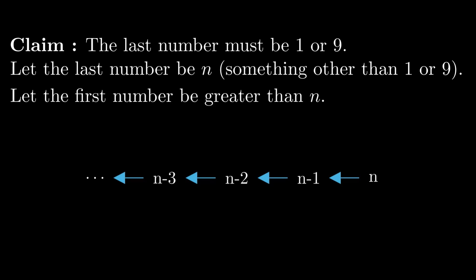Similarly, if we assume that the first number is smaller than n, we can make similar arguments with n plus 1, n plus 2, and so on. Therefore, the last number must be either 1 or 9.